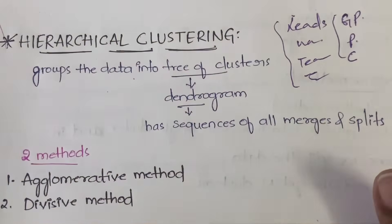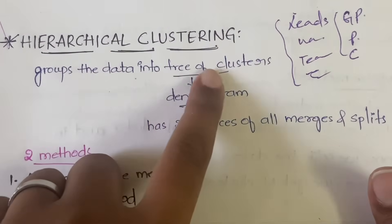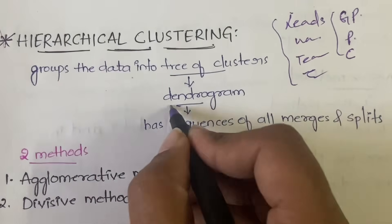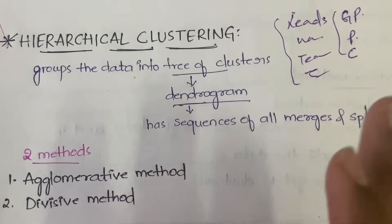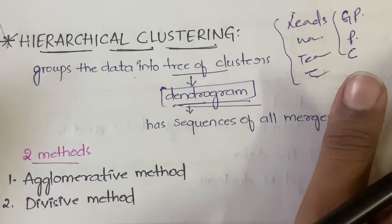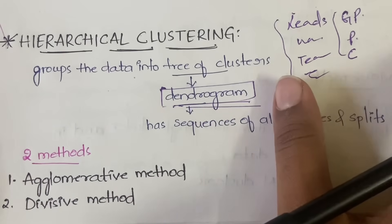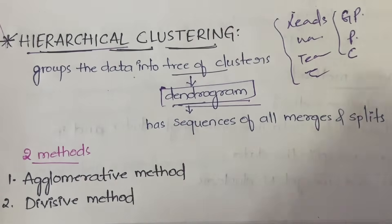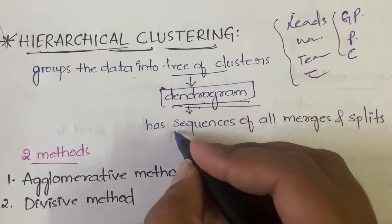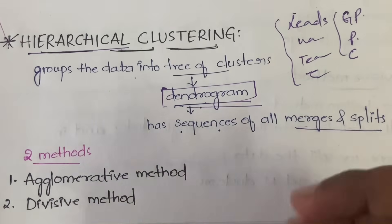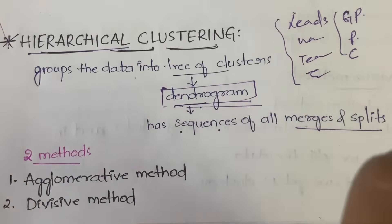In hierarchical clustering, you will be classifying the data in a hierarchy using tree structures to represent it. It groups the data into a tree of clusters, and that structure is called a dendrogram. The dendrogram contains the sequences of all the merges and splits — where you are merging the data and where you are splitting the data.